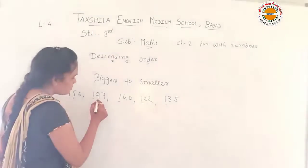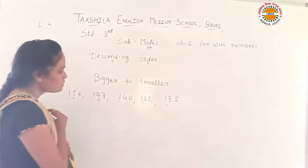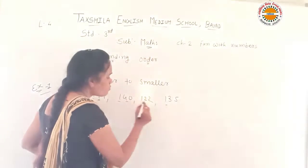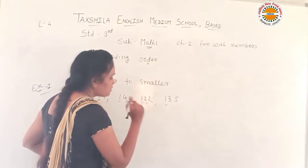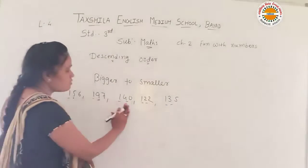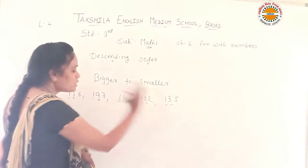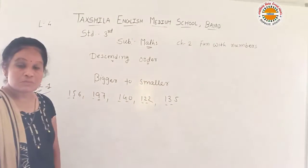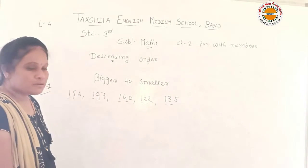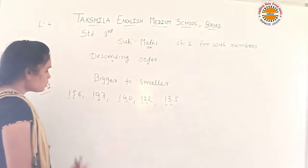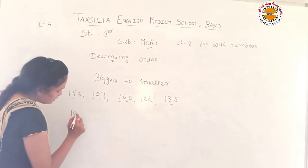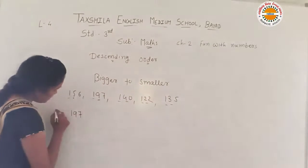5, 9, 2, 2. So the tens digits are 5, 9, 4, 2, 3. Which is the biggest number? The biggest number — 197 — goes first.